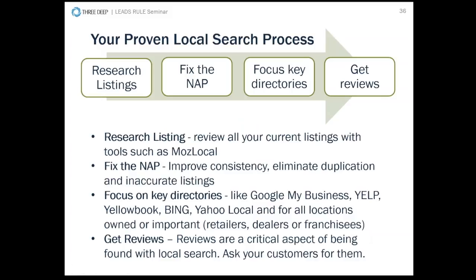For local search: research your listings and make sure physical locations have just one listing. Moz Local is a good starting point to verify that. Fix the NAP — name, address, phone number — to improve consistency and eliminate duplication. Start with key directories like Google My Business and Yelp. Then put together a plan so retailers, dealers, or franchisees follow the same format. And lastly — extremely critical — get reviews. Once you've surveyed a client and know they'll leave a positive review, ask them to review you on several review sites, as that helps you rank in local directories.